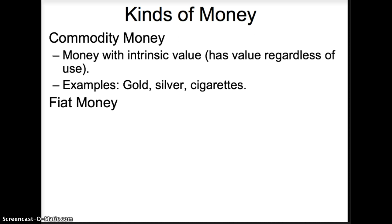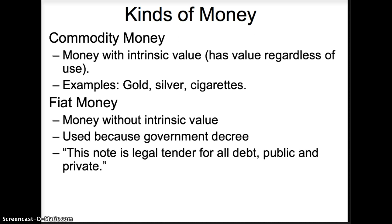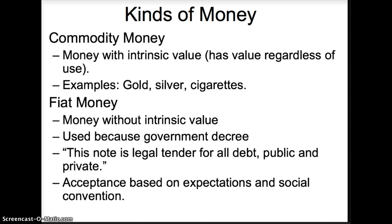Fiat money is money without intrinsic value. Fiat money has value only because it is used as money, and it is used because of government decree. On all the bills in your wallet, there is a line that states this note is legal tender for all debt, public and private — that is the statement from government telling you to use this green piece of paper, even though it has no alternative value, as money. Acceptance of fiat money is based on expectation and social convention. Since we all use these green pieces of paper, nobody questions it, and everyone expects it to be accepted when they go shopping.